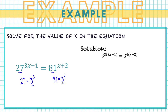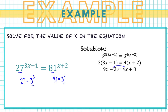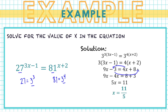Since we have the same base, we equate the exponents: 3 times (3x minus 1) equals 4 times (x plus 2). Distributing gives 9x minus 3 equals 4x plus 8. Isolating x by transposing gives 9x minus 4x equals 8 plus 3, so 5x equals 11. Dividing both sides by 5 gives x equals 11 over 5.